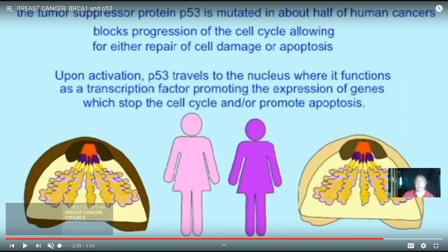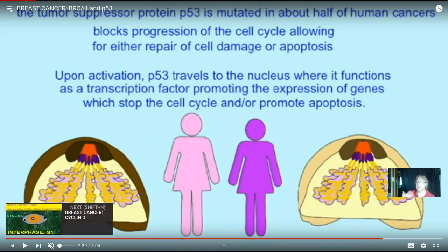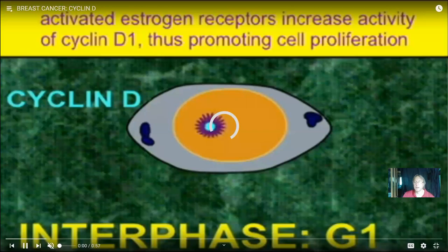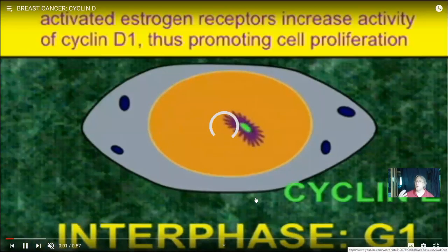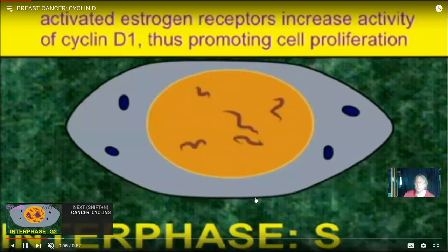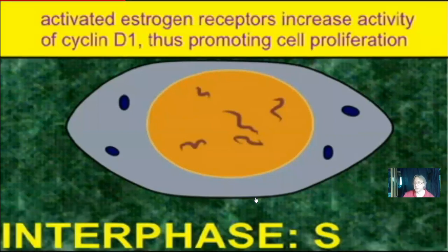We vary, and if we inherited from our parents a mutation in BRCA or a mutation in p53, we have a lesser ability to stop inappropriate cell growth. Therefore, we would have a greater risk of cancer in our lifetimes.